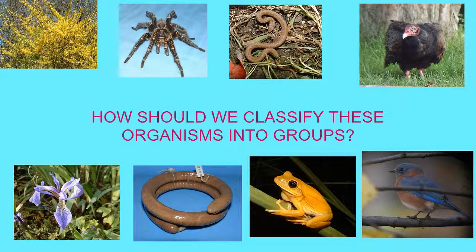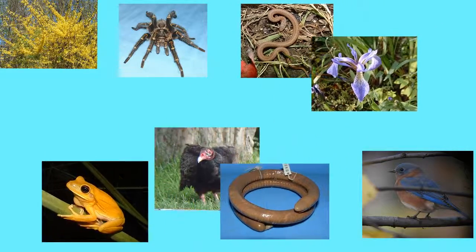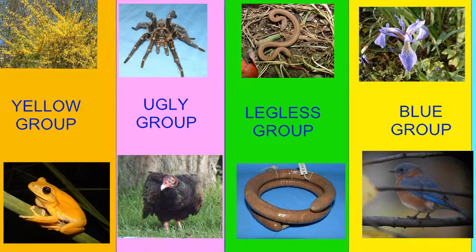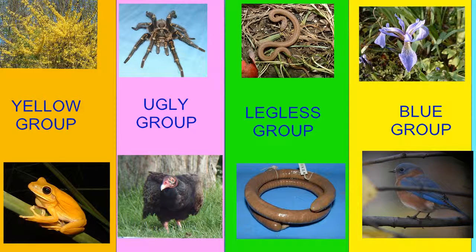We could make a yellow group, a blue group, a legless group, and an ugly group, and classifying these organisms into those four groups would look like this. Biologically speaking, these are horrible groups.